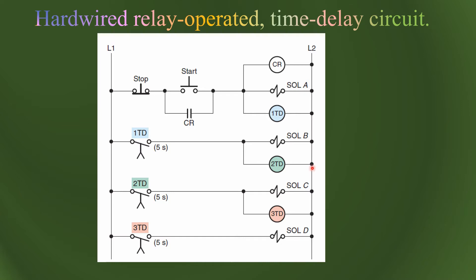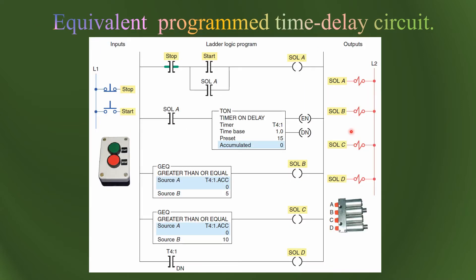This is the equivalent program time delay circuit in the PLC. We have two input switches and they are push-type switches. Normally the green is to start and the red is to stop. This is an industrial standard in which we always start the machine by pressing the green switch and stop it by red.